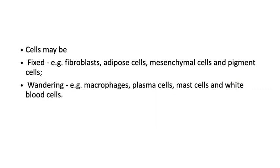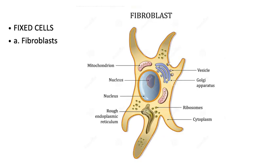Connective cells are fixed cells and wandering cells. The fixed cells are fibroblast, adipose cells, mesenchymal cells, and pigment cells. Wandering cells include macrophages, plasma cells, mast cells, and WBCs. Fibroblast cells are responsible for production of extracellular components — that is, fibers and the ground substance.